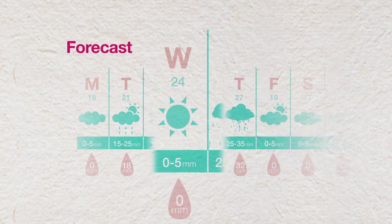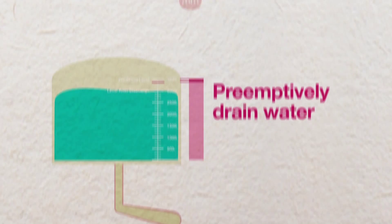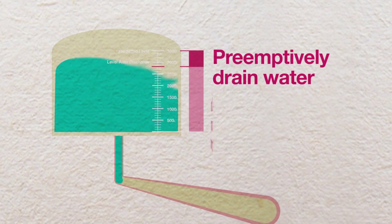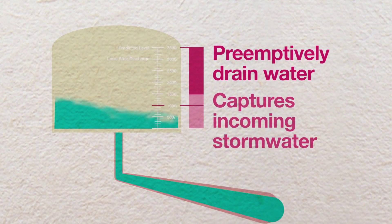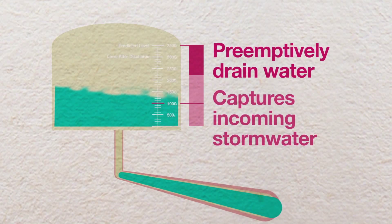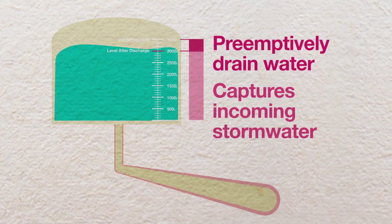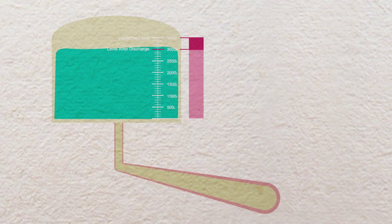TankTalk is intuitive by design. If rainfall is expected, the system will pre-emptively drain the water level in tanks to provide the capacity to capture and hold the incoming stormwater, without wasting a valuable resource.